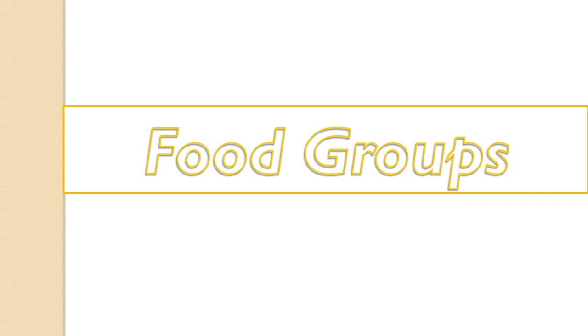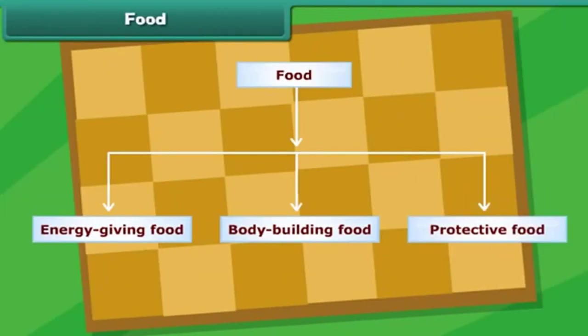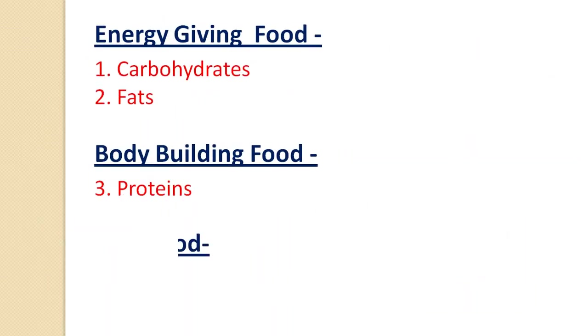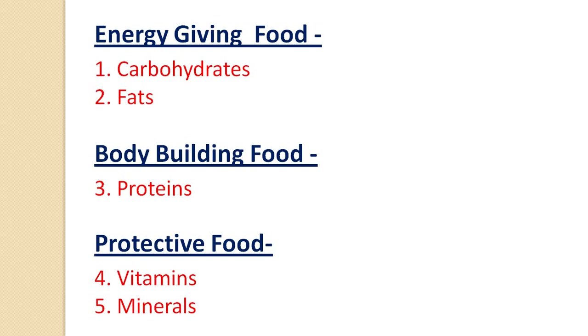Now we will see what the food groups are. On the basis of what nutrients are present in a particular food, foods can be placed into three groups: energy giving food, body building food, and protective food. Energy giving food includes carbohydrates and fats. Body building food includes proteins, and protective food includes vitamins and minerals.